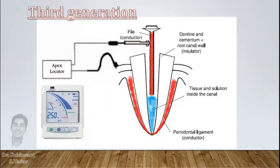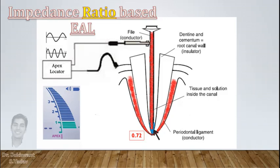To overcome this problem, third generation apex locators were introduced. In these devices, two different frequencies of current were used to record impedance. Now their impedance were compared and this ratio was found 0.72 at apical constriction in spite of any irrigant or any tissue present in the canal.